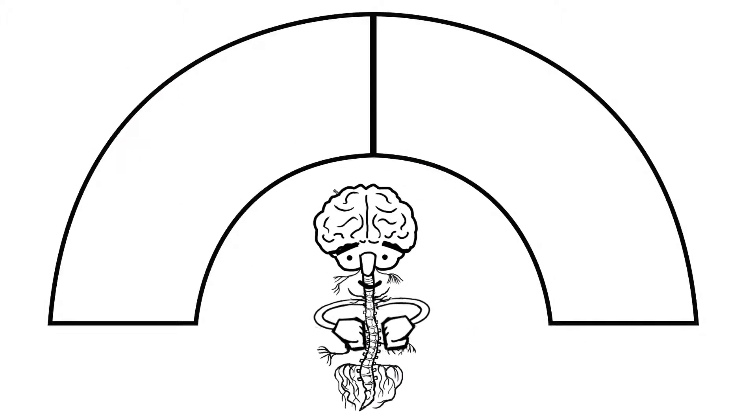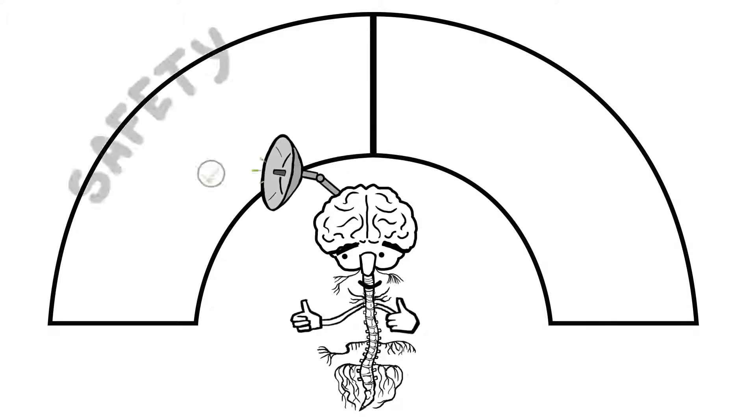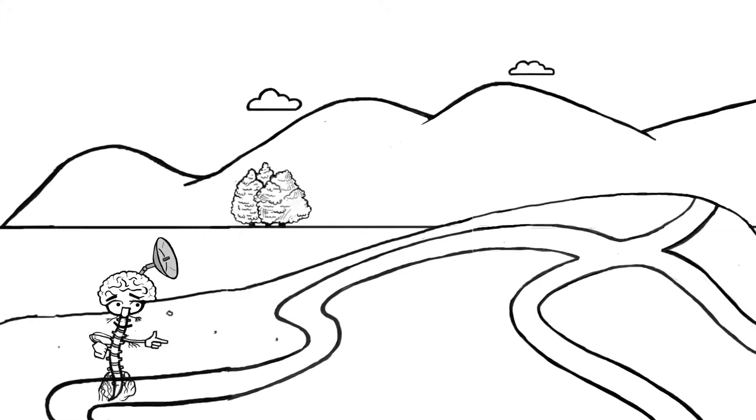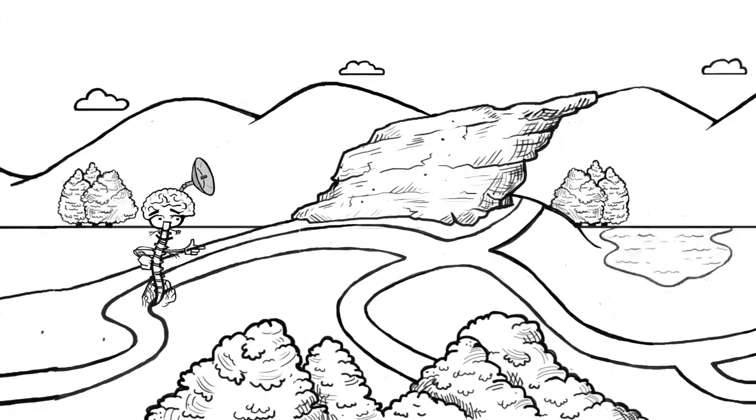ANS functions as our built-in detection system, constantly scanning our environment for cues of safety and cues of danger. As ANS scans the environment, it has three general responses or states.